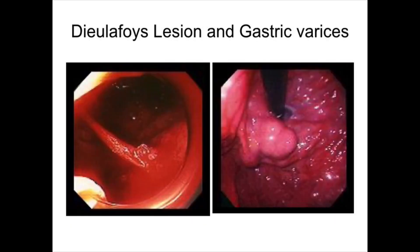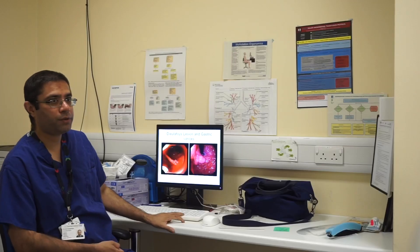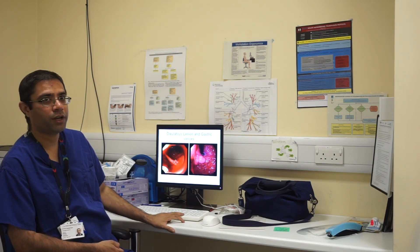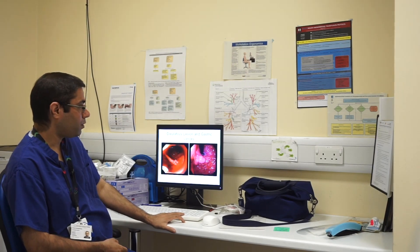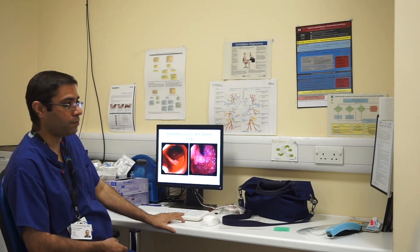Varices and Dieulafoy's lesions are also commonly seen during examinations endoscopically. These pictures show how bleeding can look during an upper GI endoscopy — picture one shows actively bleeding varices, picture two shows gastric varices. These lesions, particularly varices, can be further divided according to the Sarin classification — whether oesophageal or gastric — and sub-classified, risk stratified, and treated accordingly.